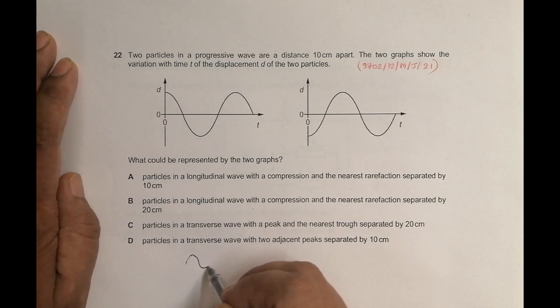They should be the particles at the, if one particle is at the crest, the other should be at the nearest trough, nearest trough. So if it is trough, then the other should be nearest crest. So it means let us go for choices.